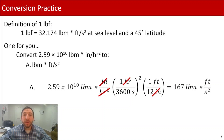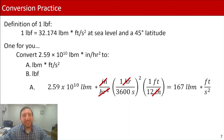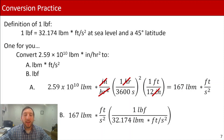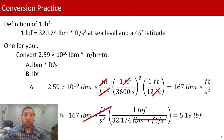We've successfully converted into pound mass times foot per second squared. Now for part b, we convert into pound force. We have 167 pound mass times foot per second squared, and we use the conversion factor: one pound force equals 32.174 pound mass times foot per second squared. Doing a quick dimensional analysis confirms the pound mass times foot per second squared units cancel out, and 167 converts to 5.19 pound force.